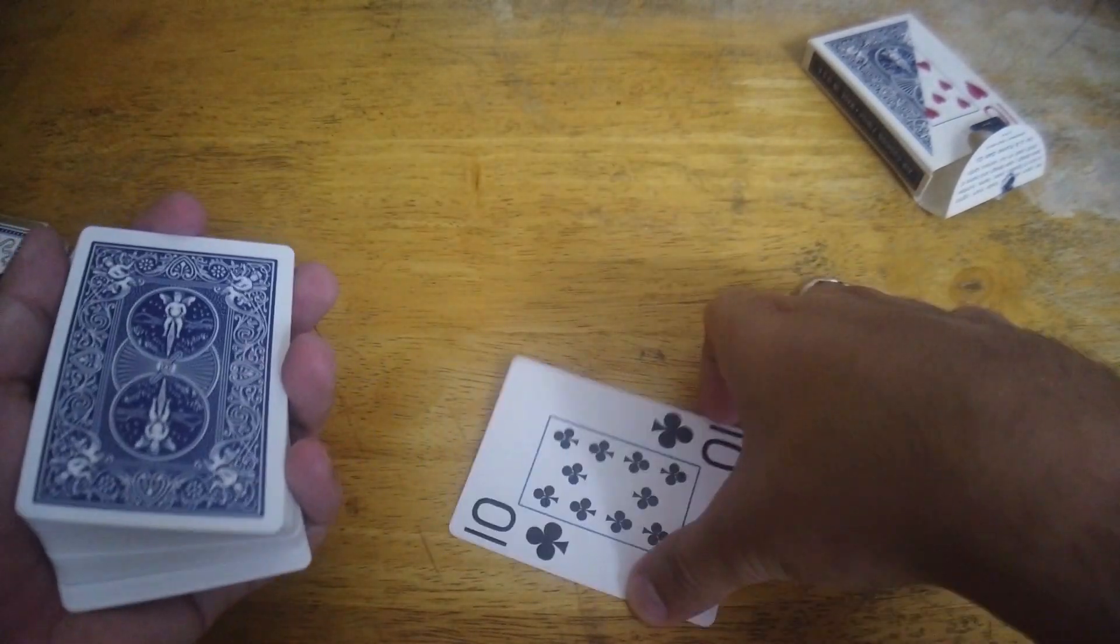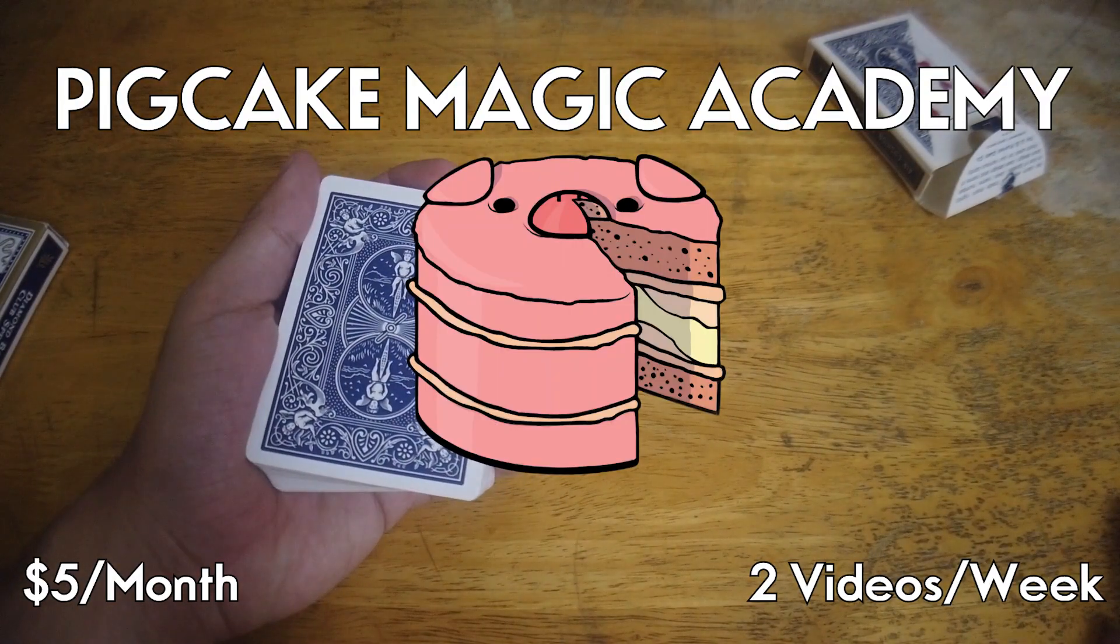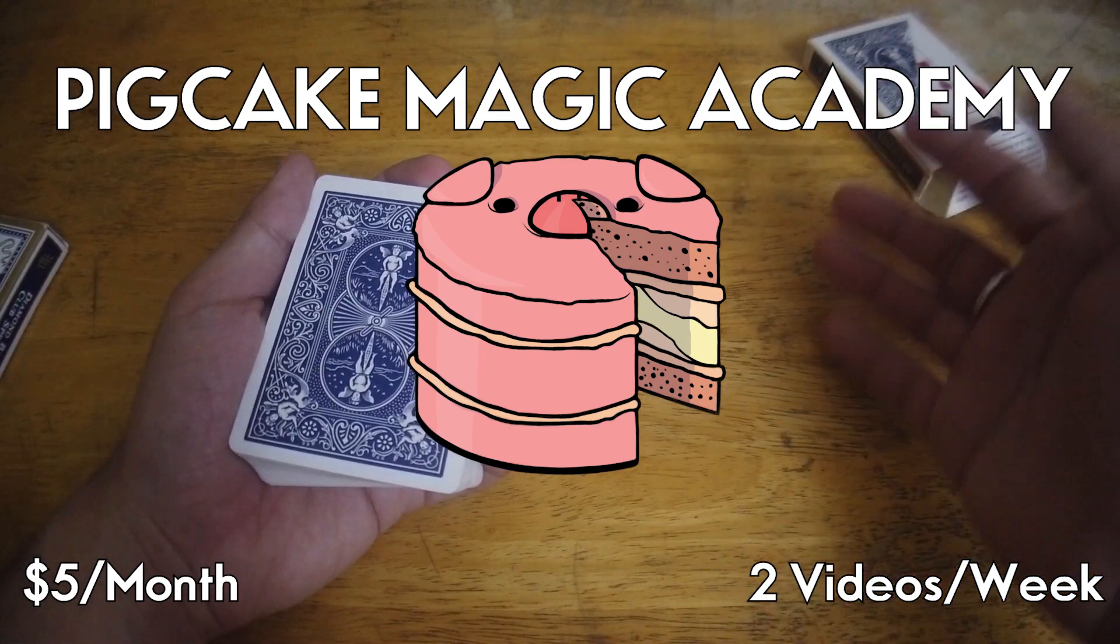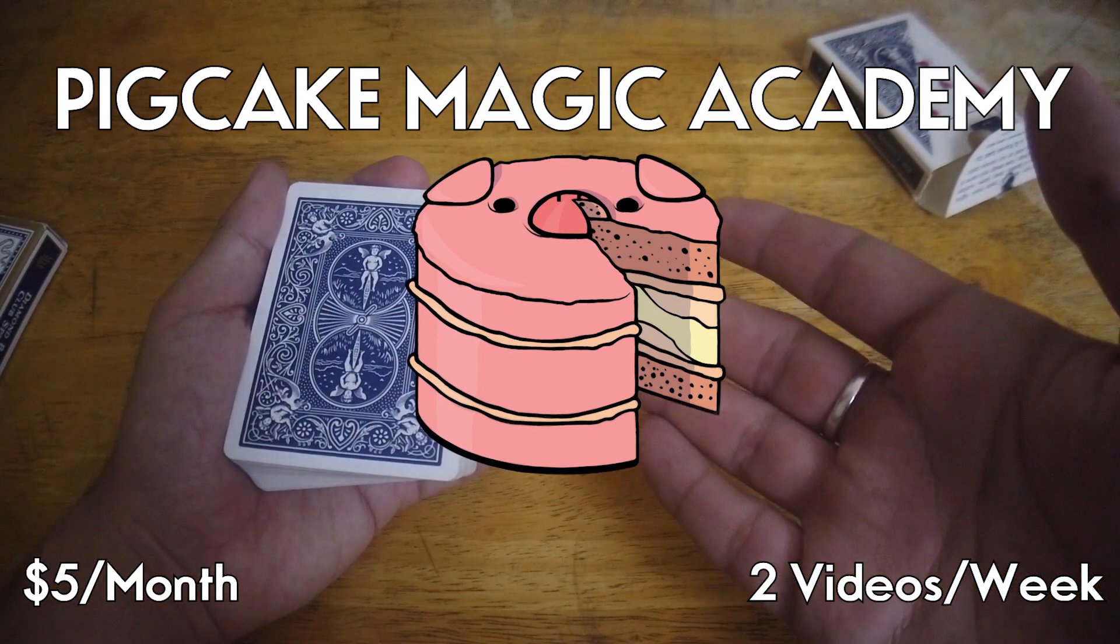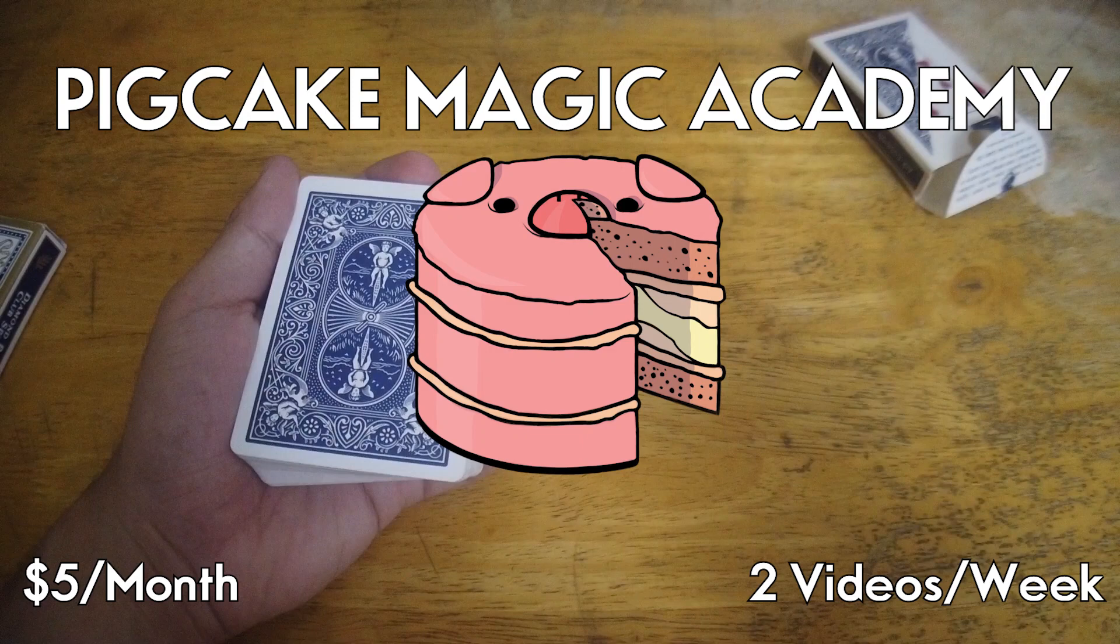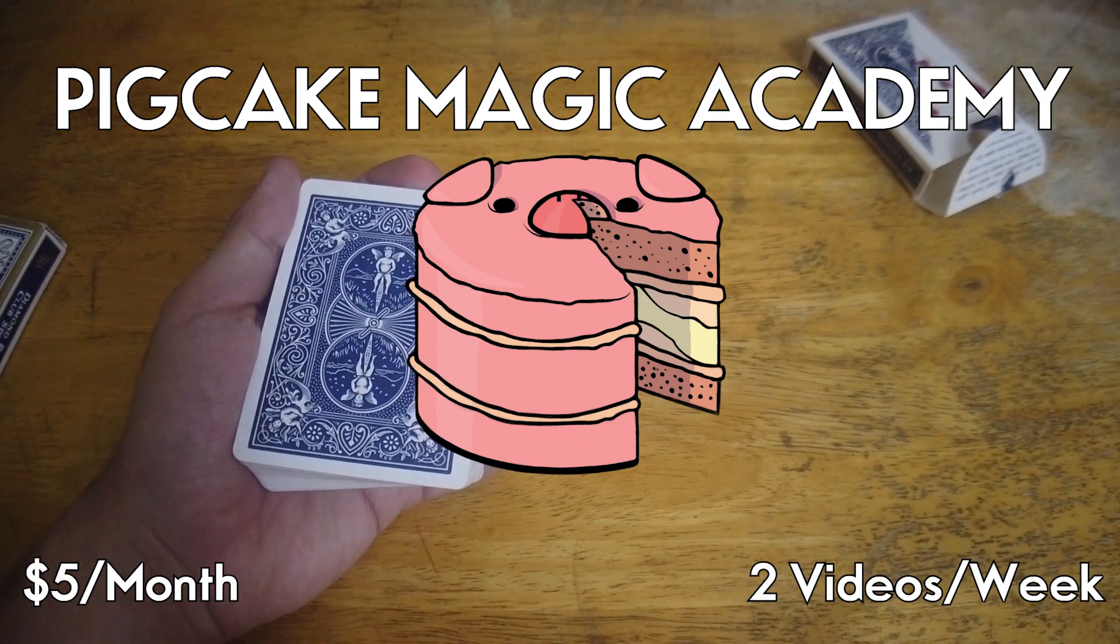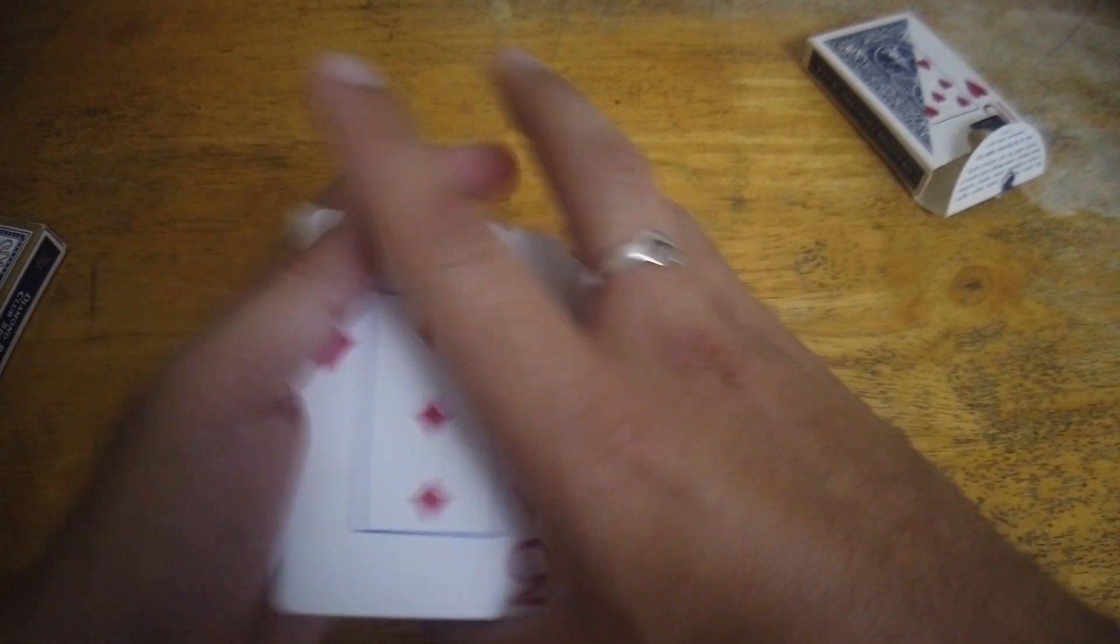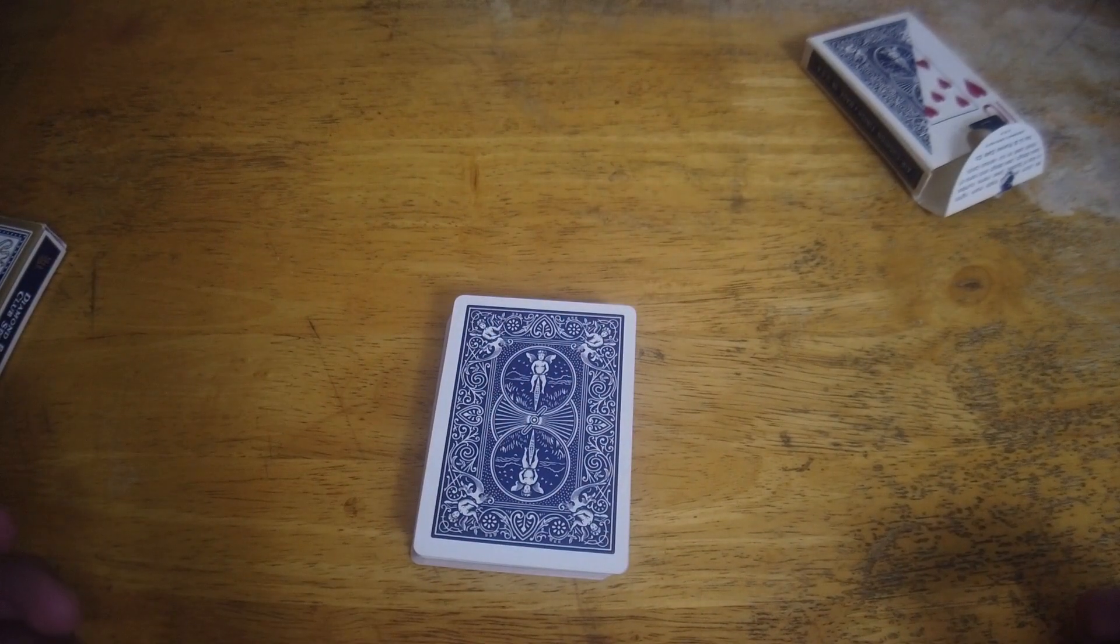Now usually, if you subscribe to the Pig Cake Card Academy, where for five dollars a month you get two new videos every single week, and you go over card and even coin stuff from the beginner all the way to an expert perspective, then you would be able to do these without much practice because you would have streamlined instruction on basic rudimentary skills and slights in magic. But here, unfortunately, we're going to have to improvise. We're going to have to use a little bit of what's known as cheating.